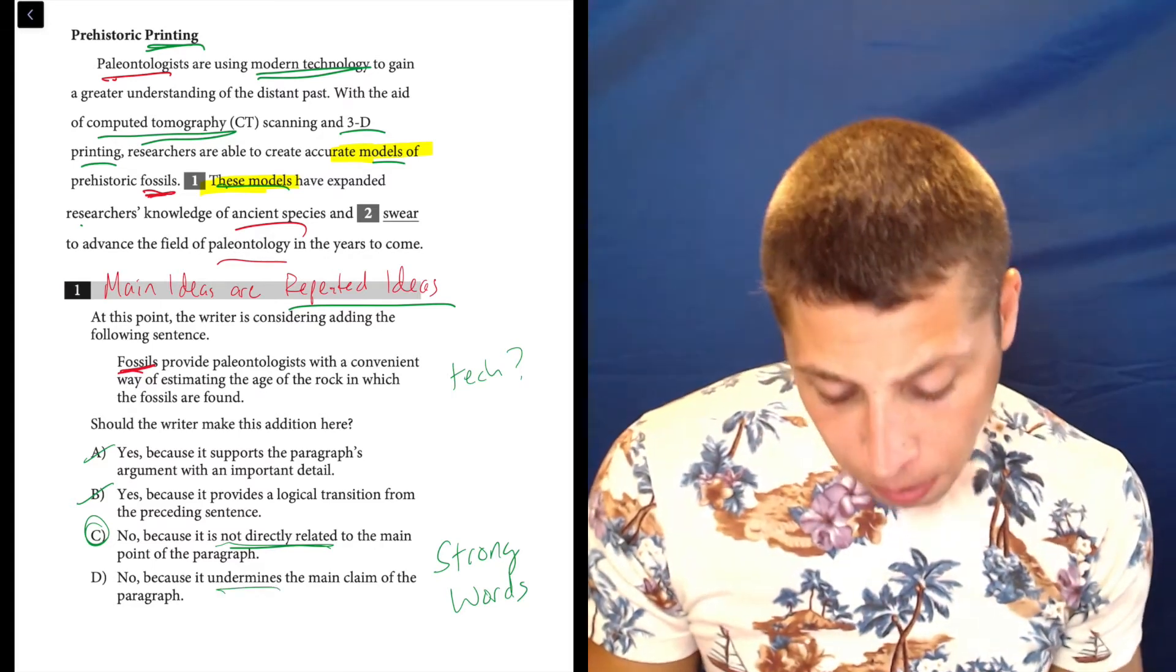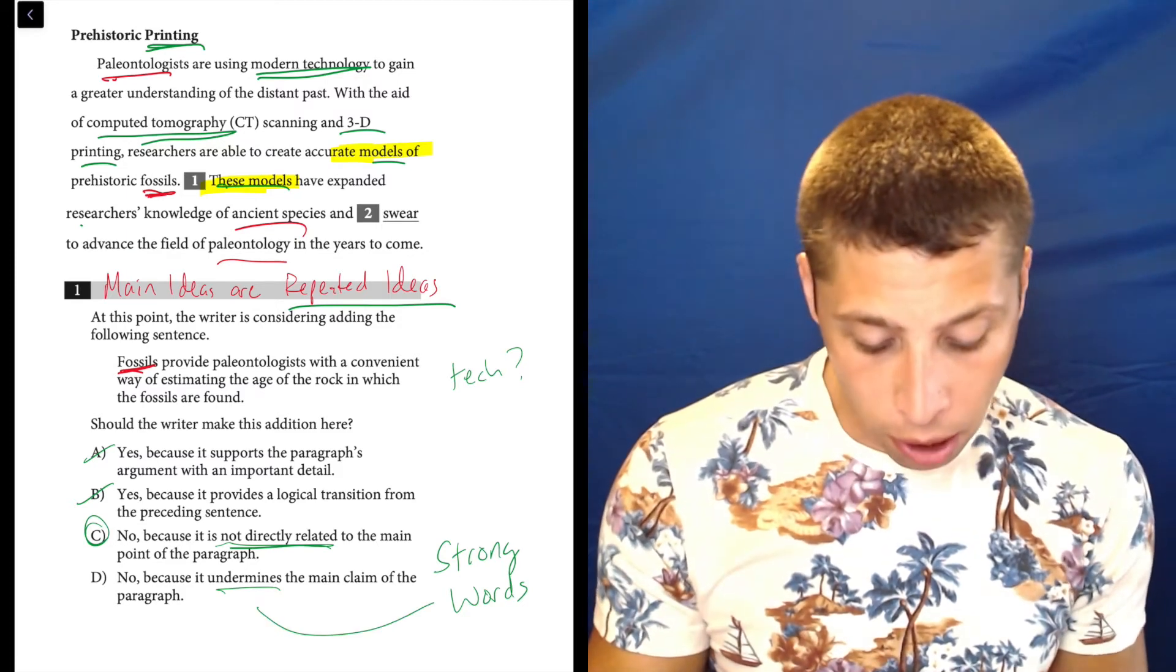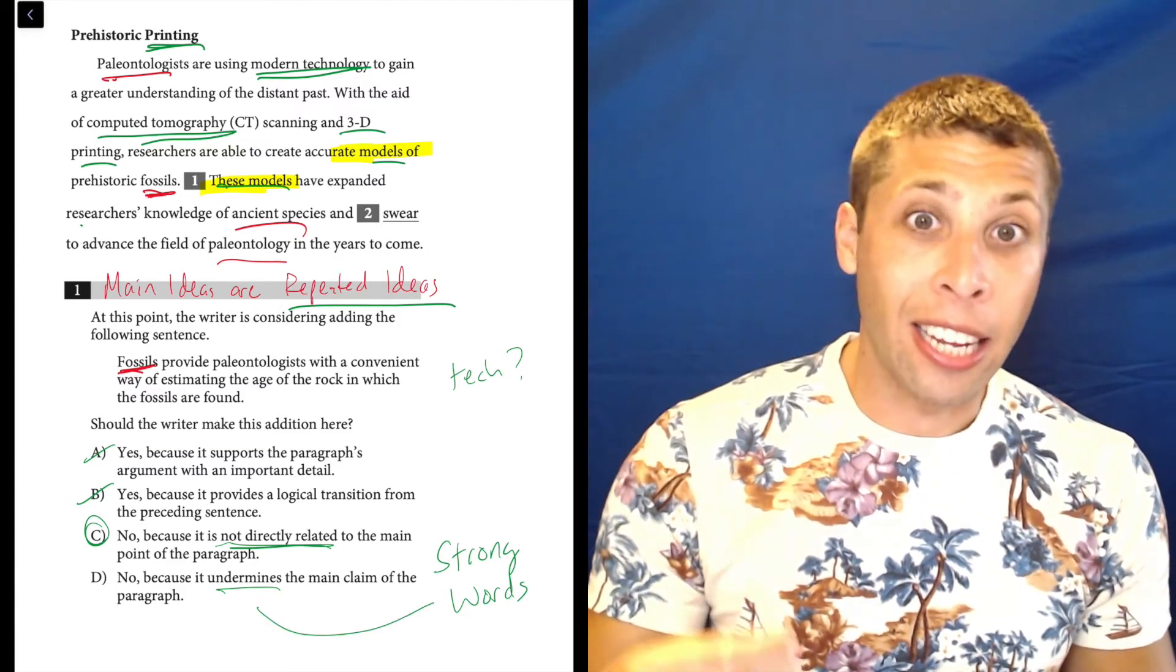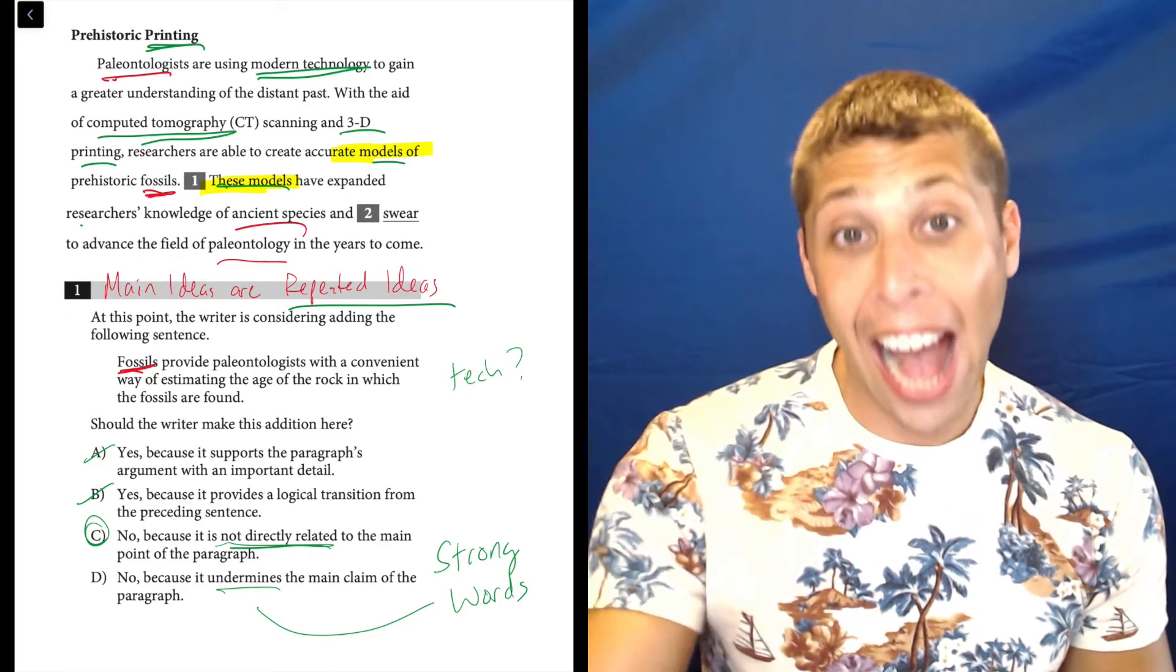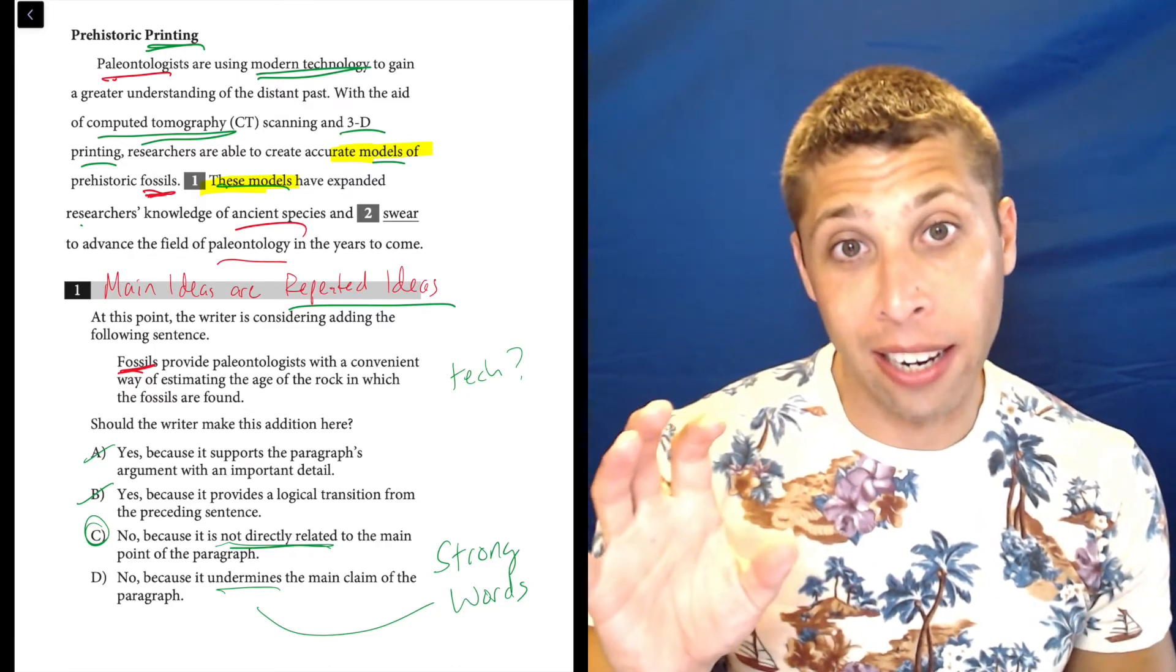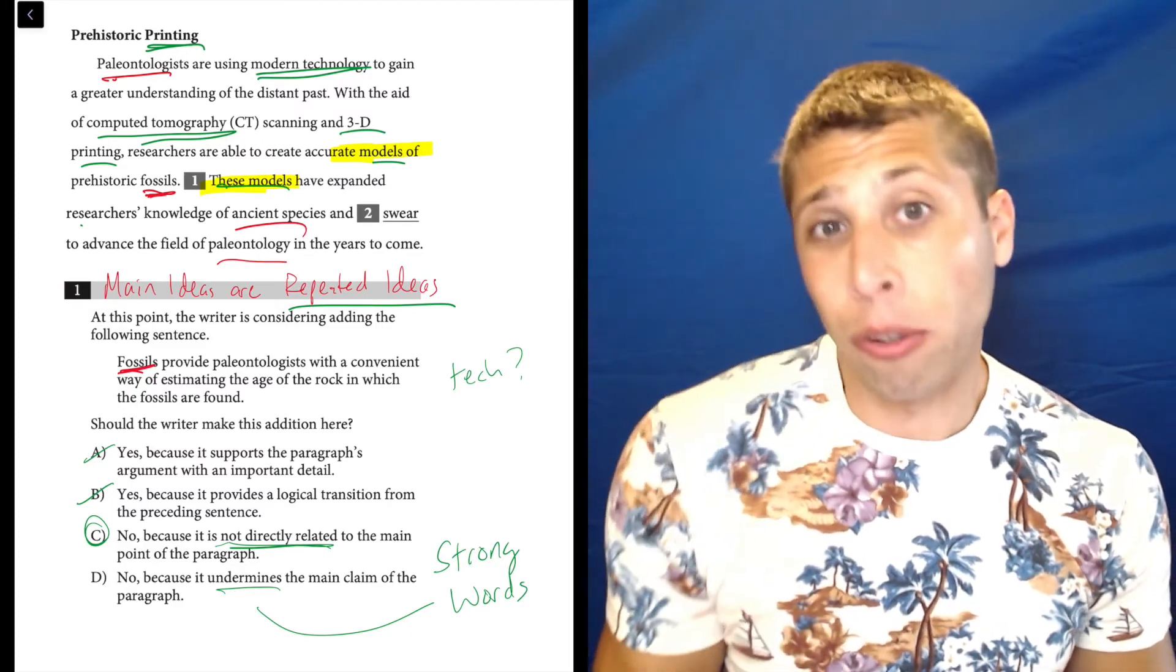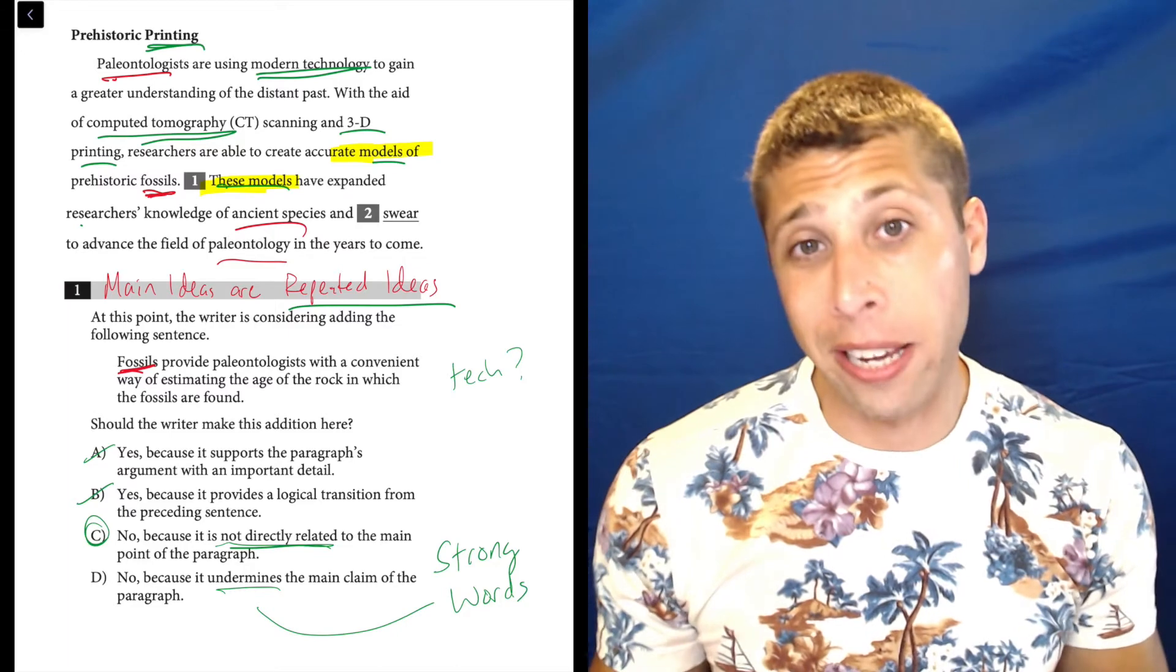D, though, it undermines the main claim of the passage. That's a little too strong because it's not like including this sentence is going to attack the point of the paragraph. It's not really like an argument against something that someone in the paragraph has already said. It's just like a random fact about fossils, one that we don't really need.